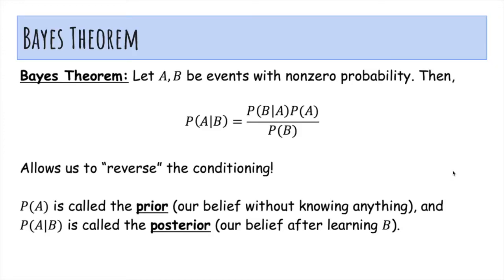So Bayes' theorem is this new tool that allows us to compute the probability of A given B in terms of probability of B given A. It allows us to reverse the conditioning. Usually one of these two numbers is much easier to compute than the other.